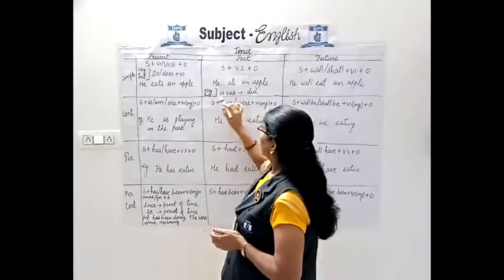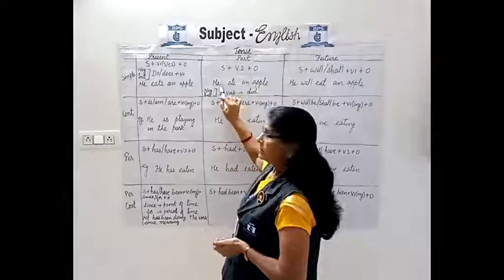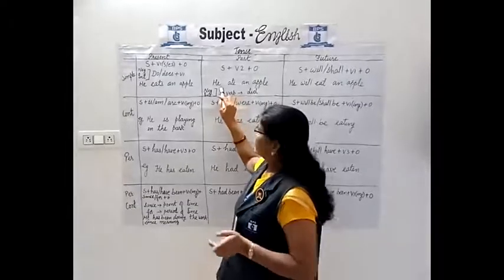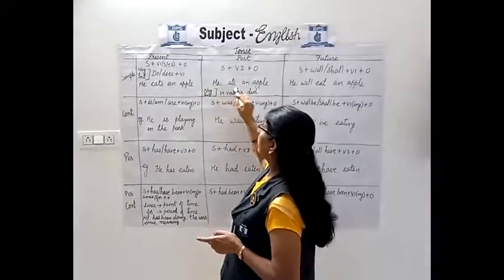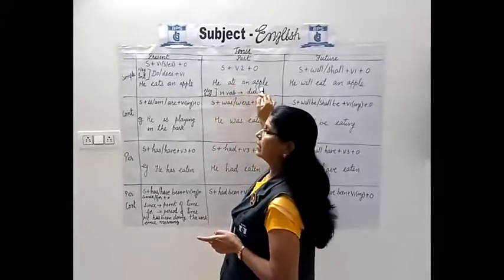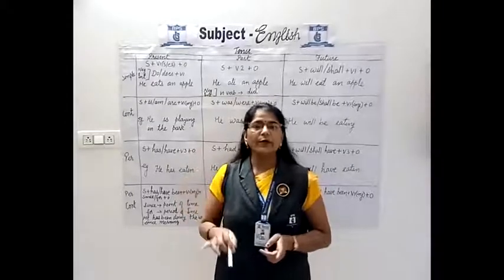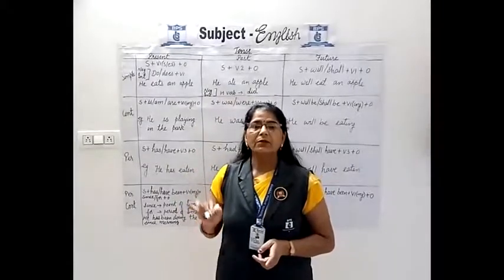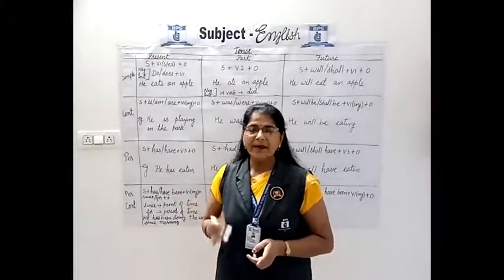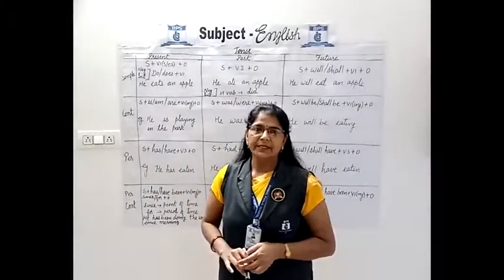For the interrogative sentence: 'Did he eat an apple?' After completing the sentence, don't forget to put a question mark. That covers past simple tense.